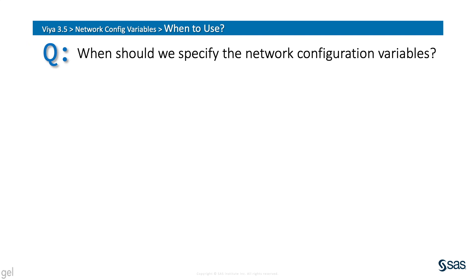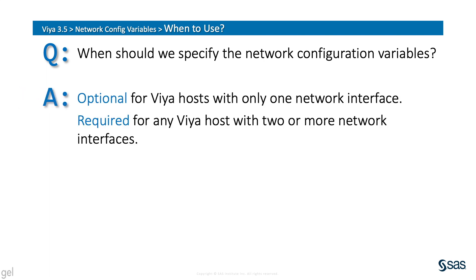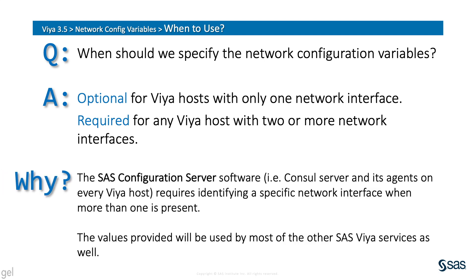So when exactly do we need to specify these network configuration variables? The answer depends, of course. For Viya hosts with a single NIC, these variables aren't typically needed. However, for Viya hosts with multiple NICs, you must specify at least SAS_HOSTNAME and SAS_BIND_ADDR, and the other variables might come in handy too. The reason is because the SAS configuration server drives some of this technical requirement — on hosts with more than one NIC, it requires configuration to bind to a single interface. There are other network infrastructure and configuration drivers too.